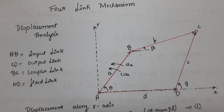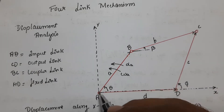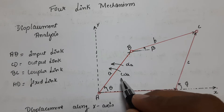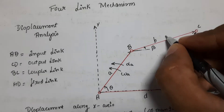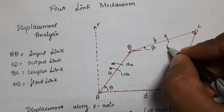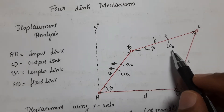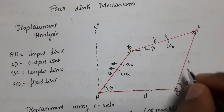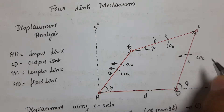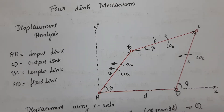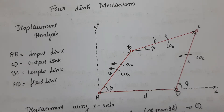For the velocity analysis, let us consider omega_a as the angular velocity of the input link, omega_b as the angular velocity of the coupler link, and omega_c as the angular velocity of the output link.